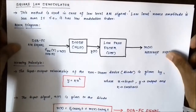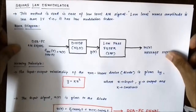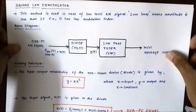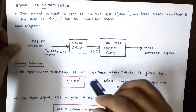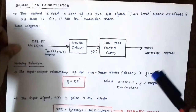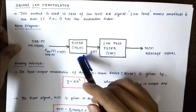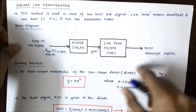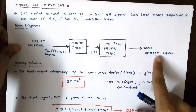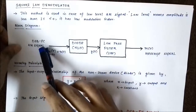This is a limitation of the square law demodulator — it can only be used efficiently for low amplitude level amplitude modulated signals. This is the block diagram or circuit diagram of the square law demodulator method. It consists of a diode or any other non-linear device such as a transistor, but here we have taken a diode. Then we have a low pass filter with a sharp cutoff frequency to extract the message signal. The input signal fed to the diode is the double sideband full carrier signal.